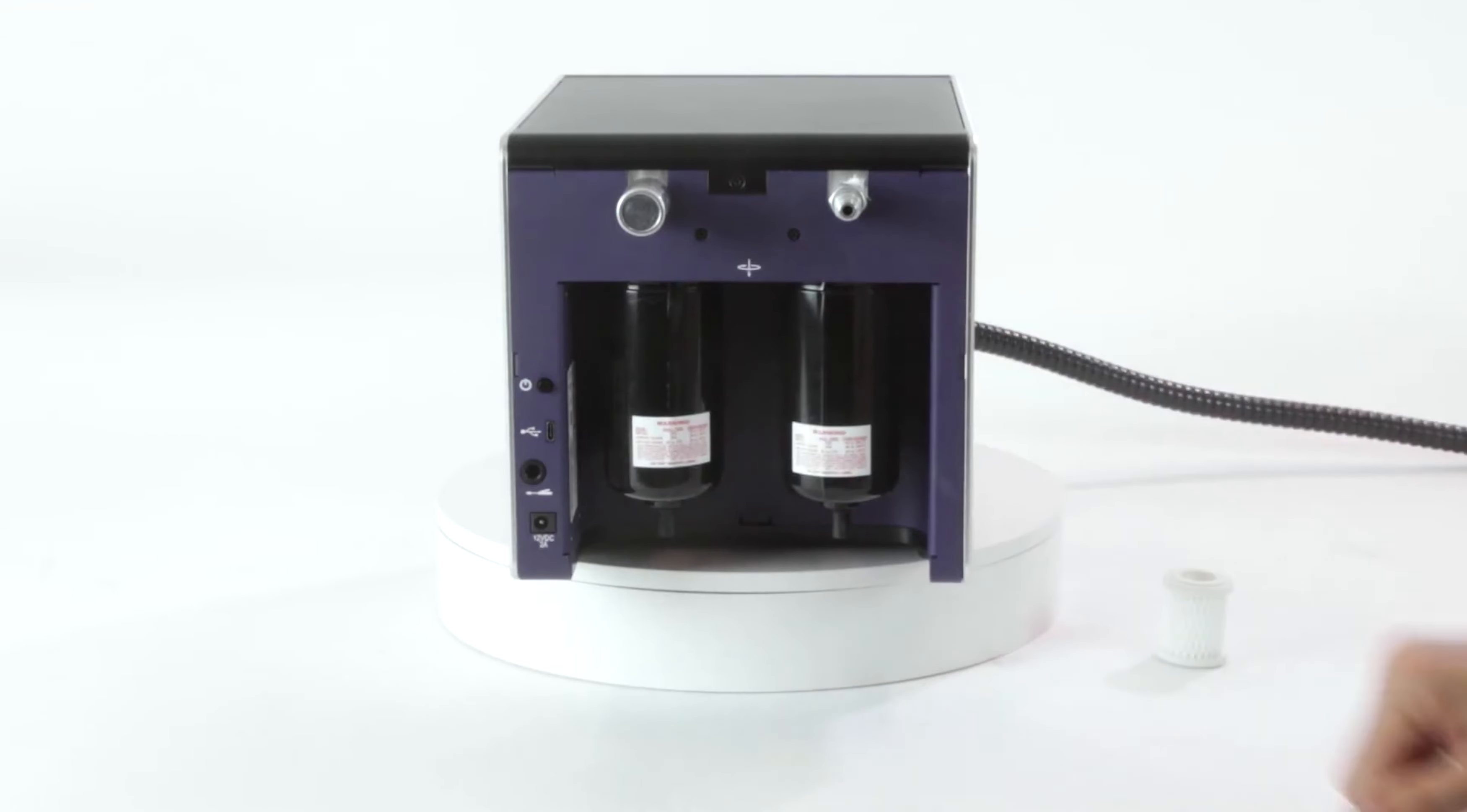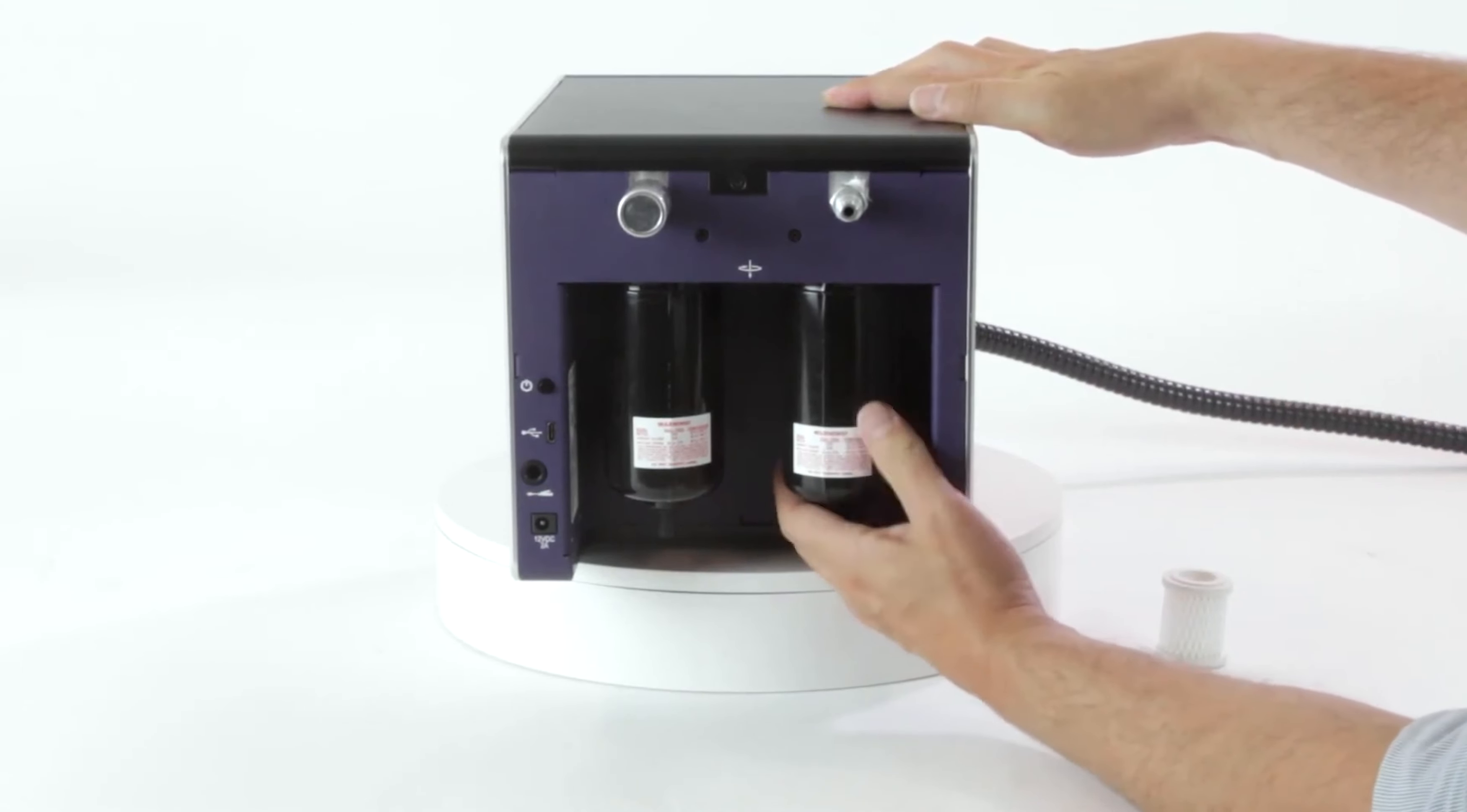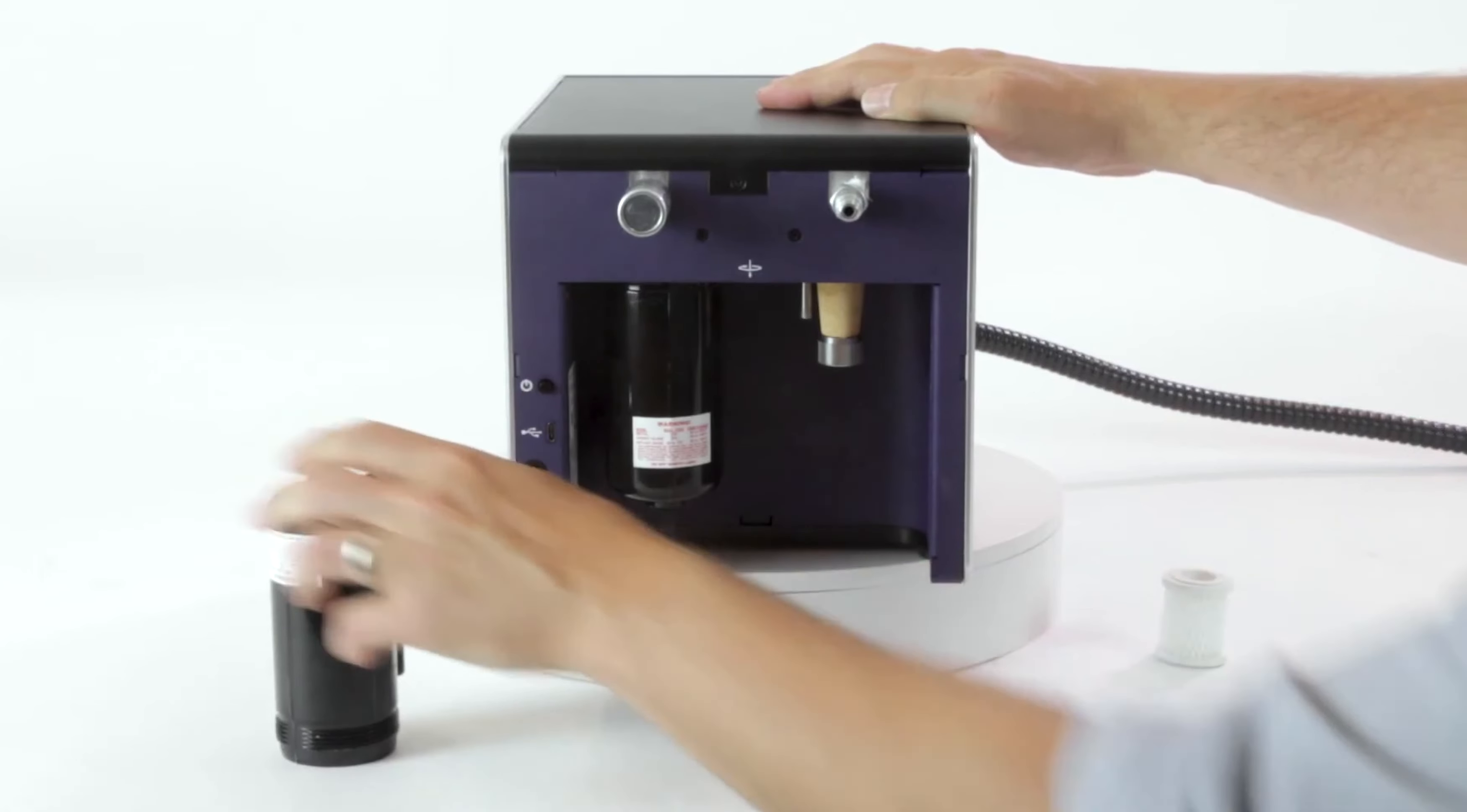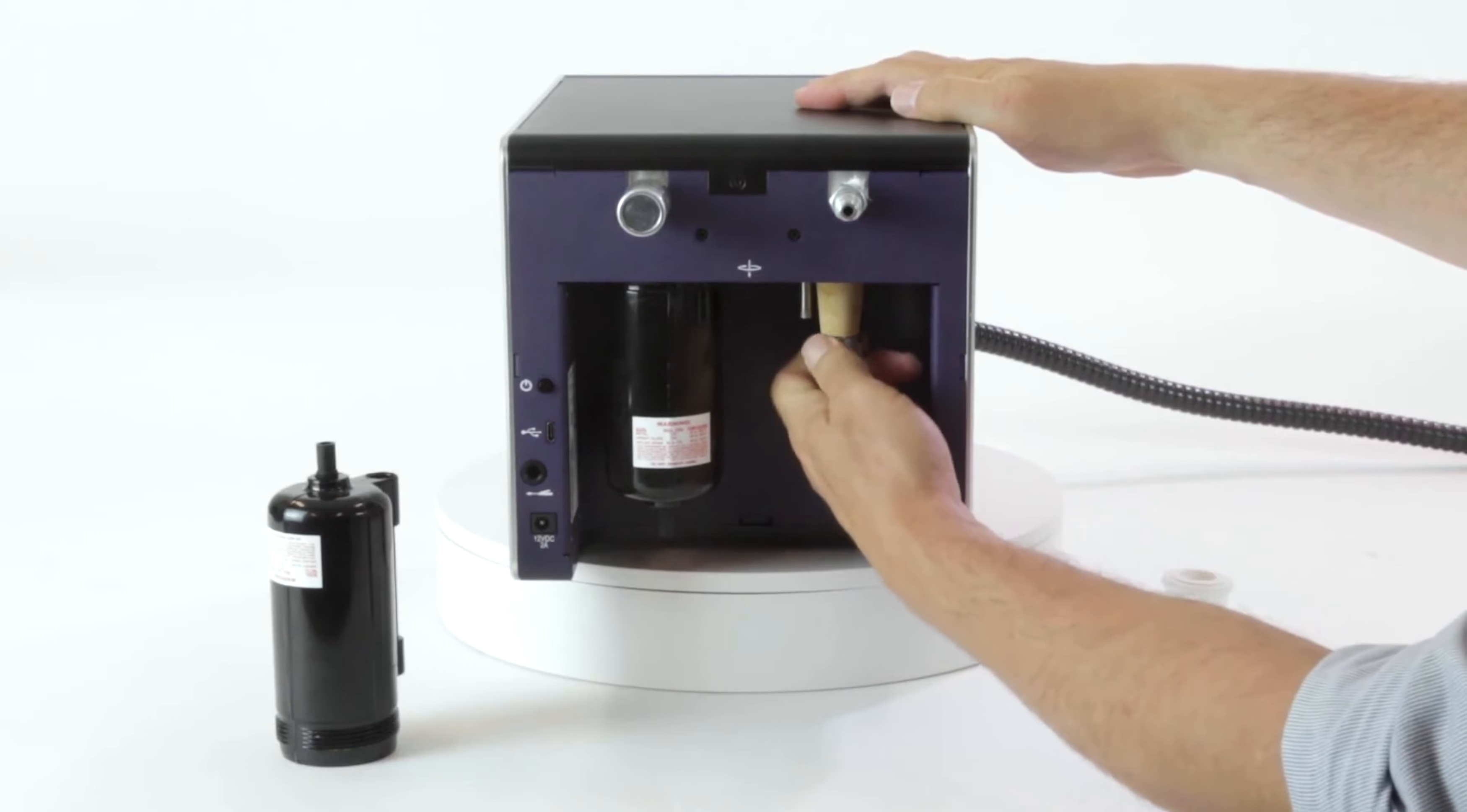Now let's go ahead and change the coarse air filter. The same thing, I'll remove the canister by turning it clockwise. Now the coarse air filter is visible, I'll do the same thing. Turn it clockwise.